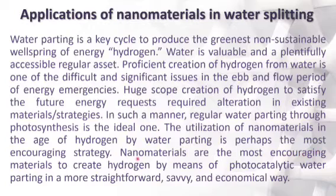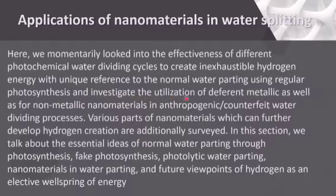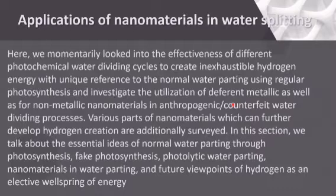Nanomaterials are the most promising materials to produce hydrogen via photocatalytic water splitting in a more straightforward, cost-effective, and sustainable way. The effectiveness of different photochemical water splitting processes to generate renewable hydrogen energy is reviewed, with reference to natural water splitting through photosynthesis, artificial photosynthesis, and the utilization of metallic and nano-metallic materials in anthropogenic water splitting. Various aspects of nanomaterials that can further improve hydrogen production are also surveyed.